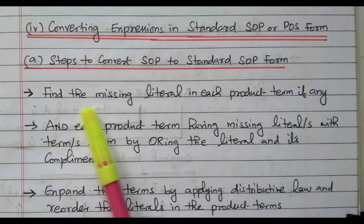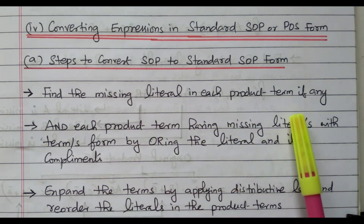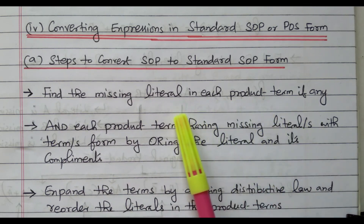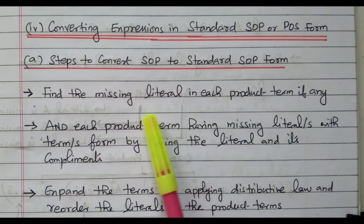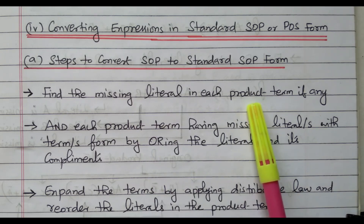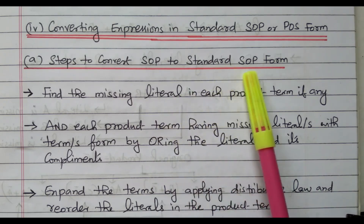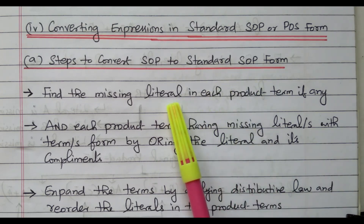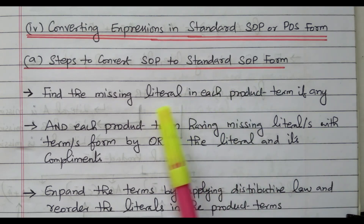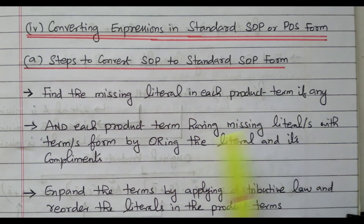Step one: find the missing literals in each product term, if any. We need to see if any literal is missing. All the product terms must contain all the literals — that is called a standard SOP. What does standard SOP mean? It contains all the literals. So first, we need to find if any literal is missing in the product term.